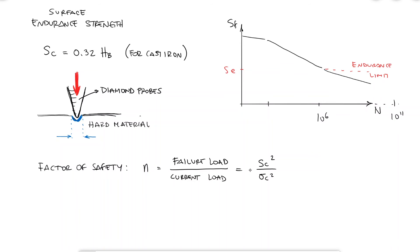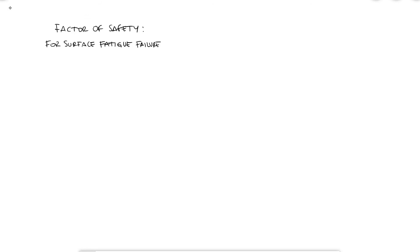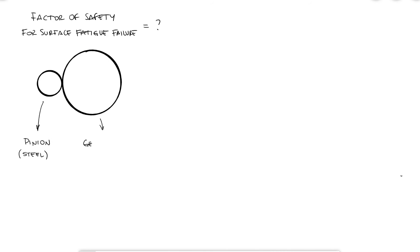Let's look at an example where we want to find the factor of safety for surface fatigue failure of the gear in the gear system we rated for power during the previous main video, link below. The only change we'll make is that the gear is now made out of cast iron instead of the 1020 steel, everything else will be kept the same.